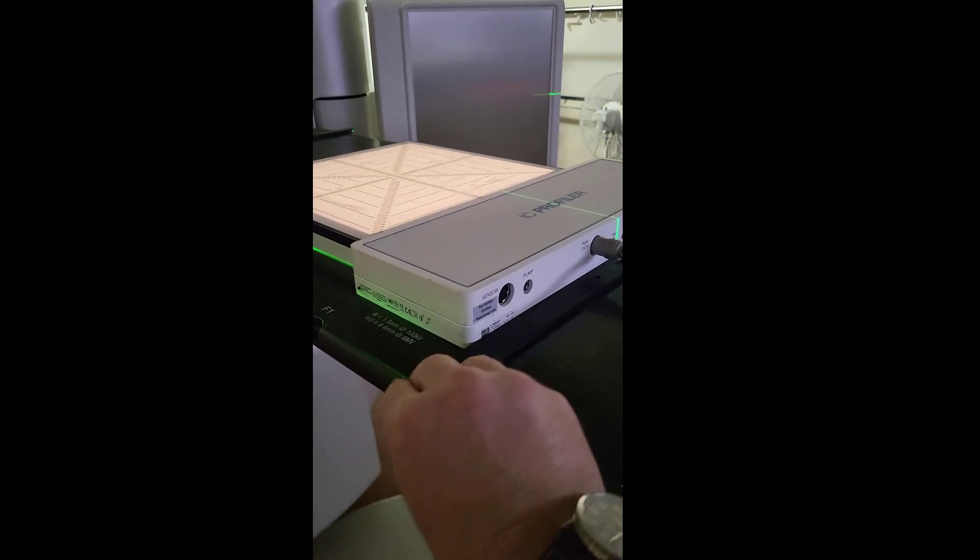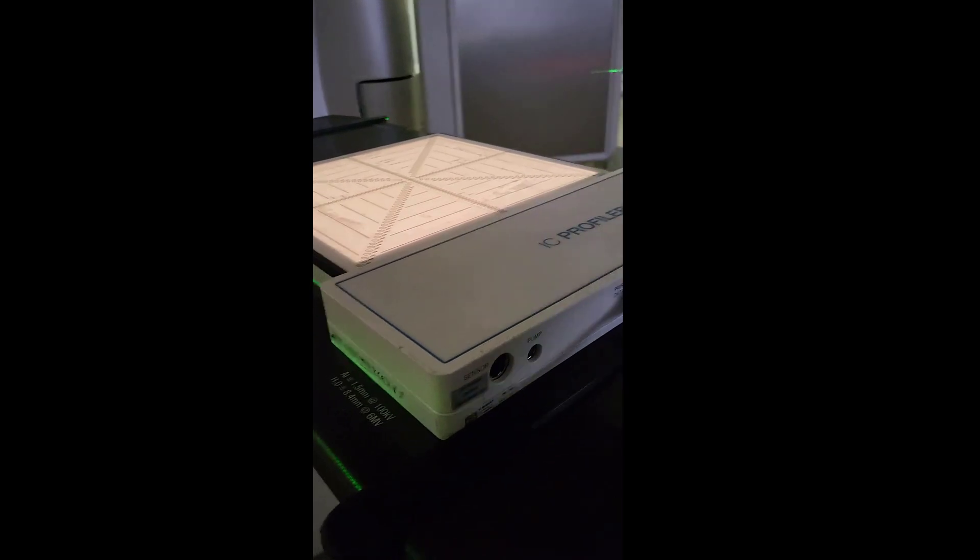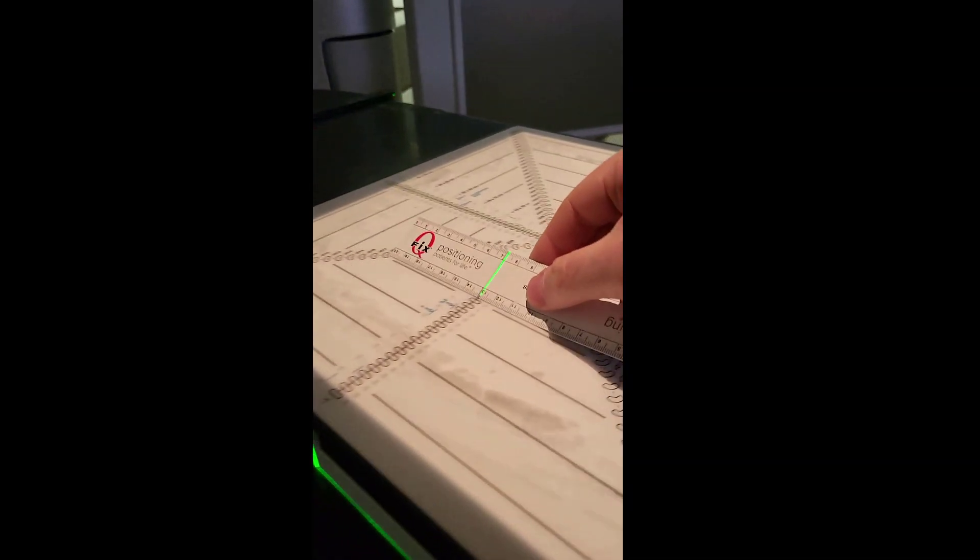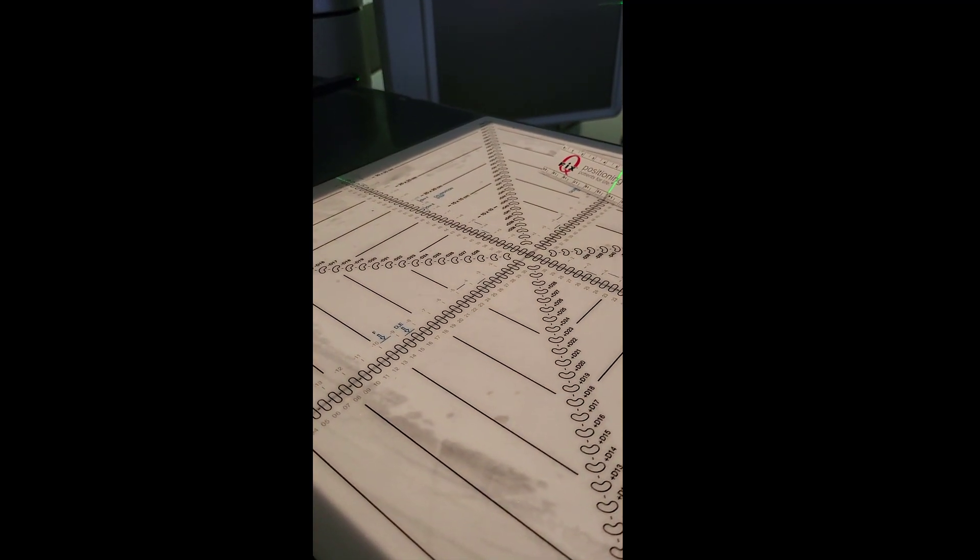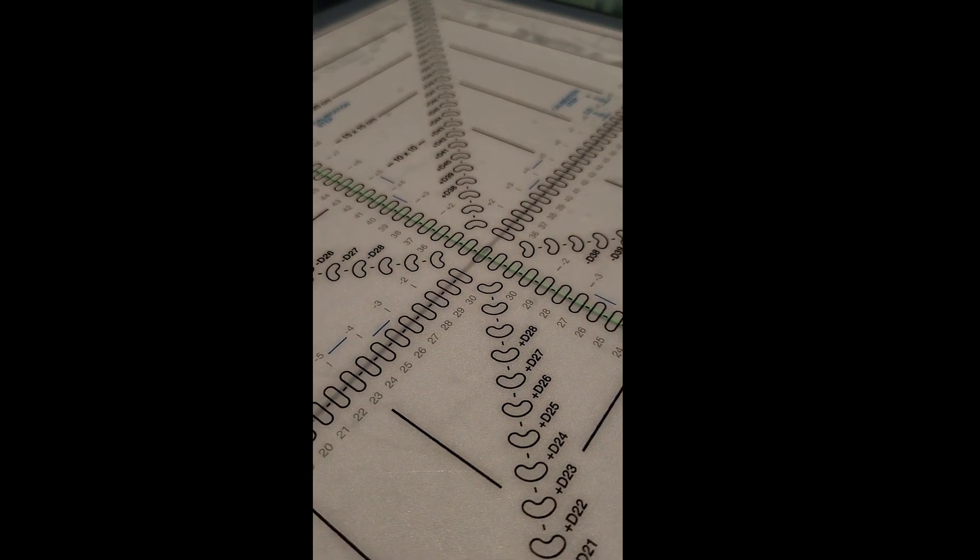Nowadays, we use array devices, ion chamber array devices. And this is probably the more common one, the IC profiler. And each kidney bean shape is an ion chamber.